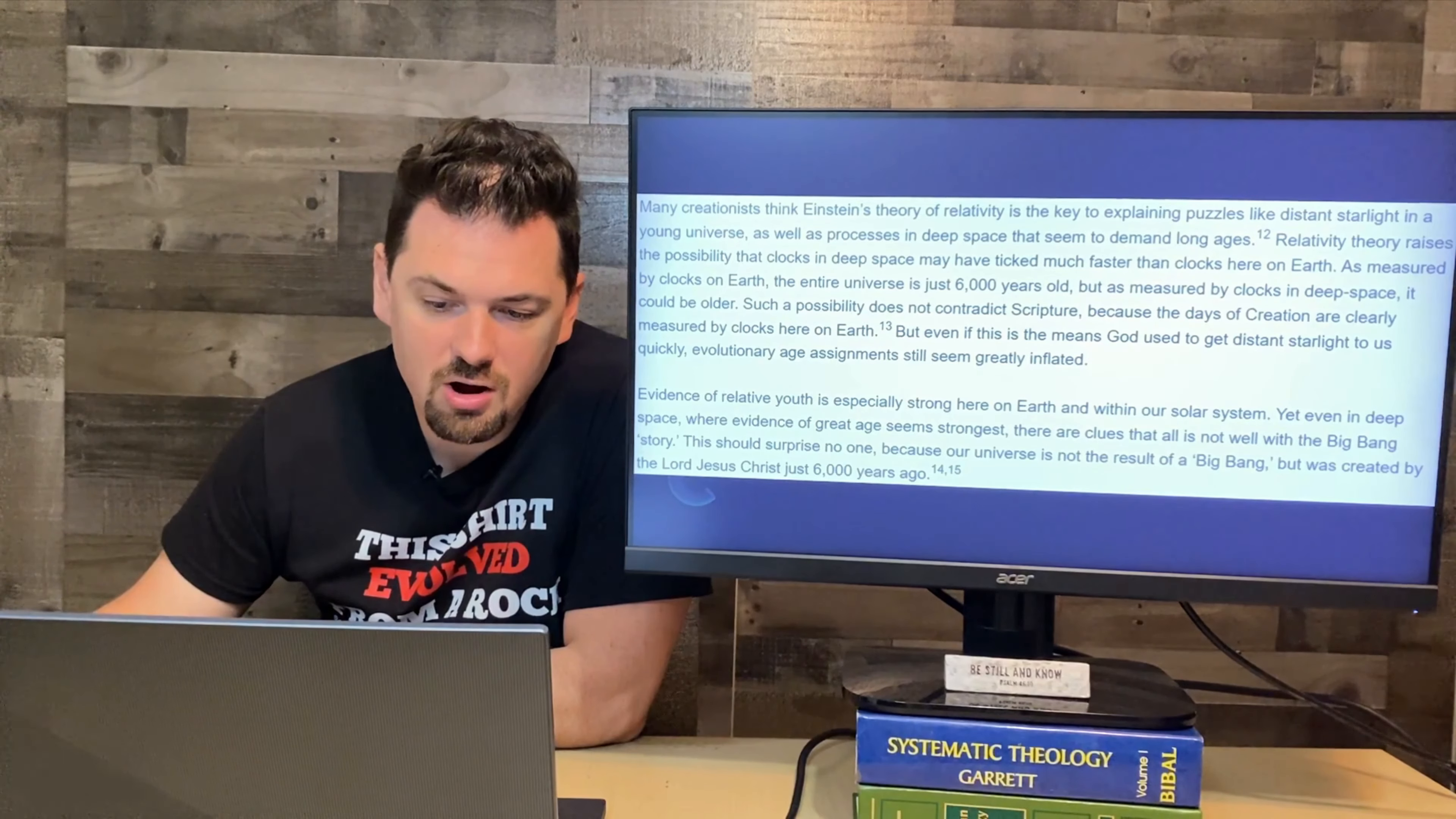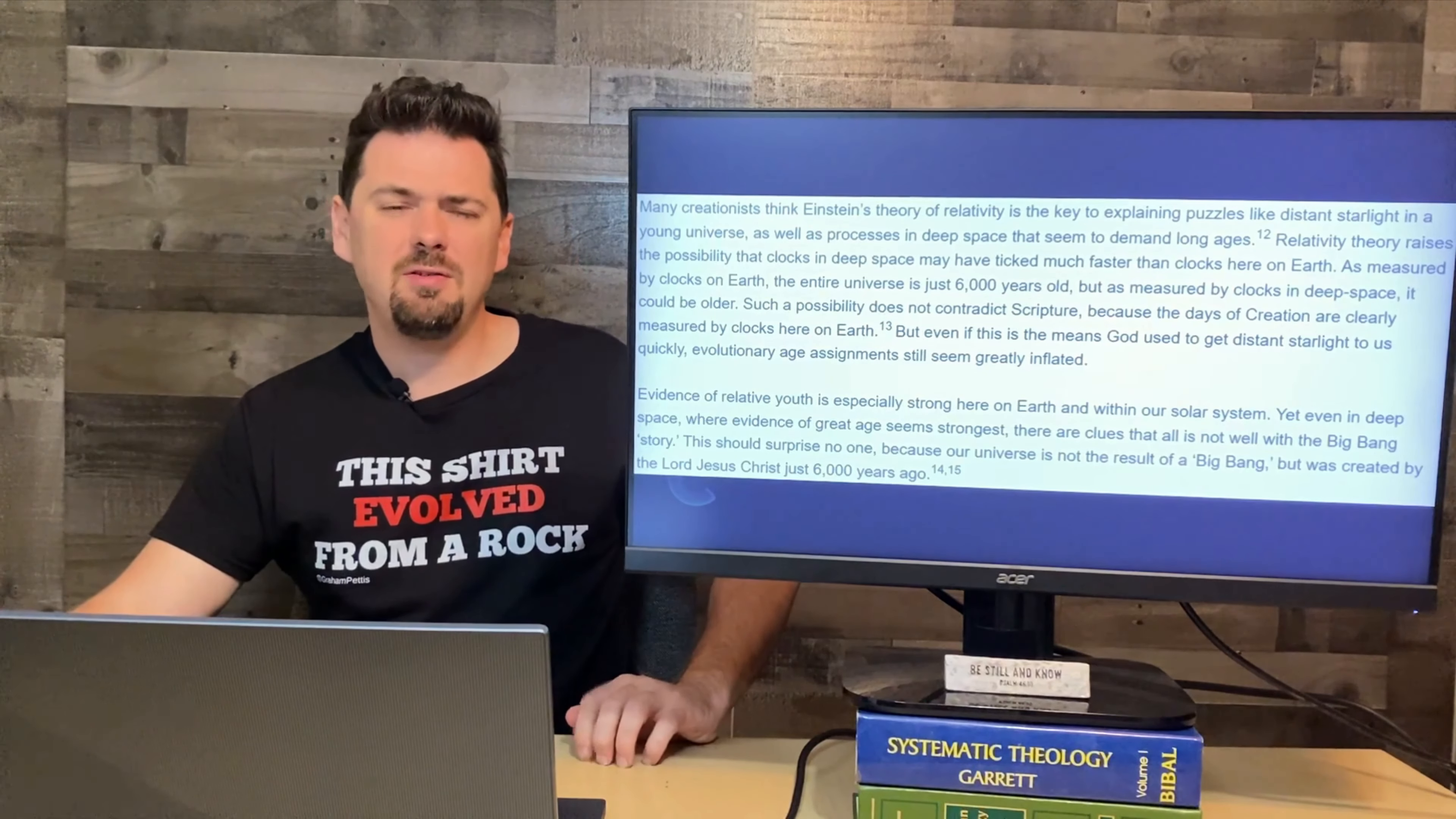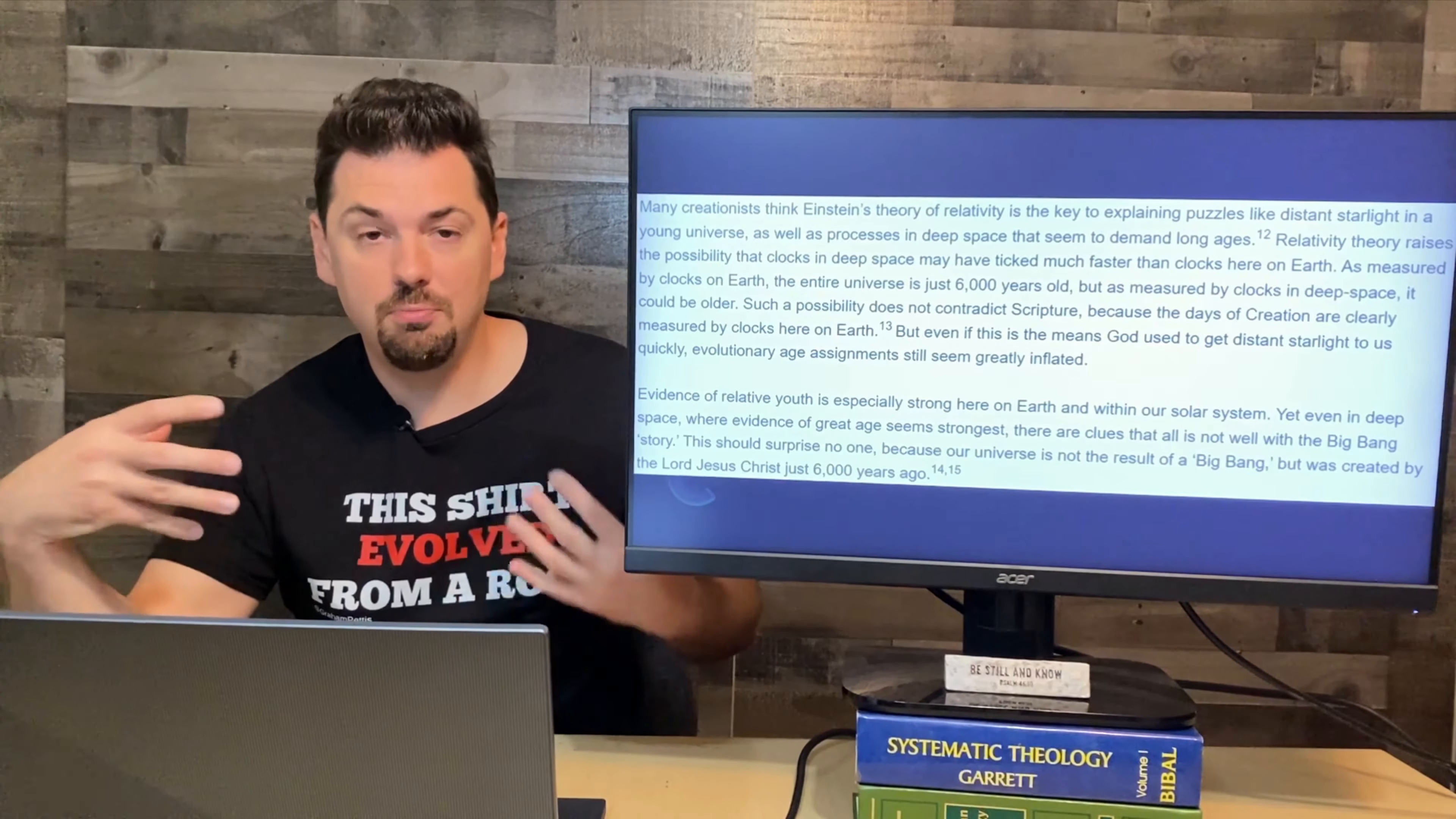Evidence of relative youth is especially strong here on Earth and within our solar system. Yet, even in deep space, where evidence of great age seems strong, is there a clue that all is not well with the Big Bang story? This should surprise no one because our universe is not the result of a Big Bang, but it was created by the Lord Jesus Christ just 6,000 years ago. I posted a video talking about even a lot of big-time scientists, evolutionists are coming out and saying there's a lot of big gaps in the Big Bang Theory. We need to start coming up either with a different theory or figure out how these gaps fill in. But to me, I think everything just makes more sense as soon as you put a creator in there.